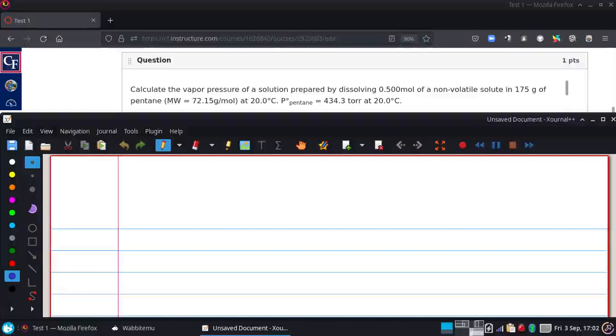We're going to calculate the vapor pressure of a solution prepared by dissolving 0.5 moles of a non-volatile solute in 185 grams of pentane at 20 degrees Celsius, given that the standard vapor pressure of pentane is 434.3 torr at 20 degrees Celsius.